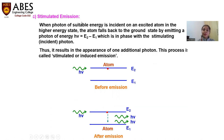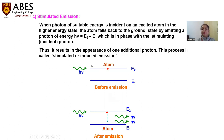In stimulated emission, the atom is in the excited state at E2 level. An external photon of energy h-nu is incident on this atom sitting at the higher level, and it pushes that atom to the ground state. When the atom drops to the ground state, it is going to emit two photons.